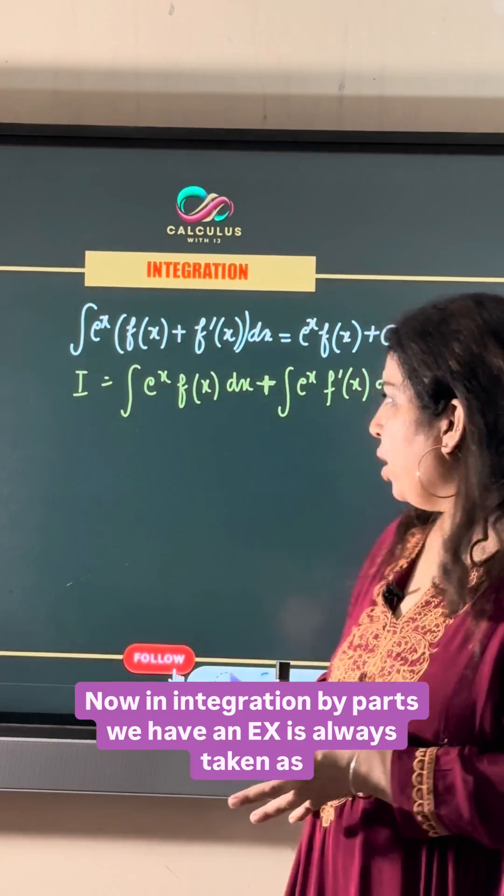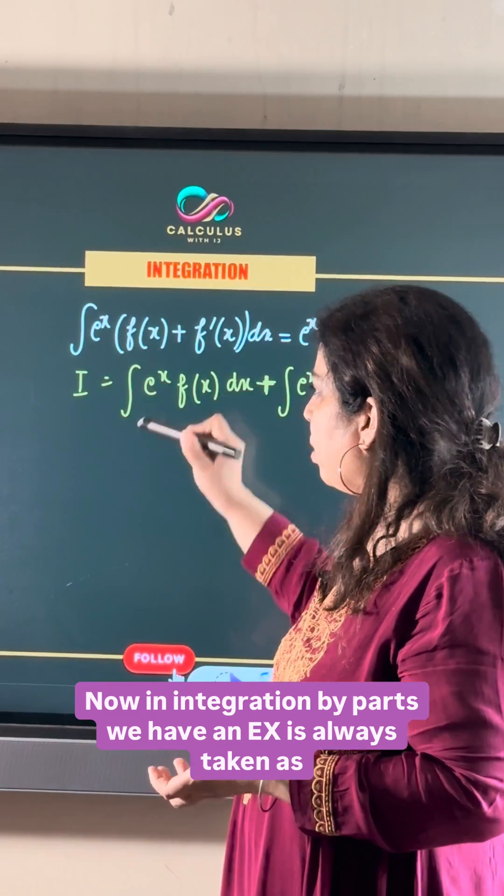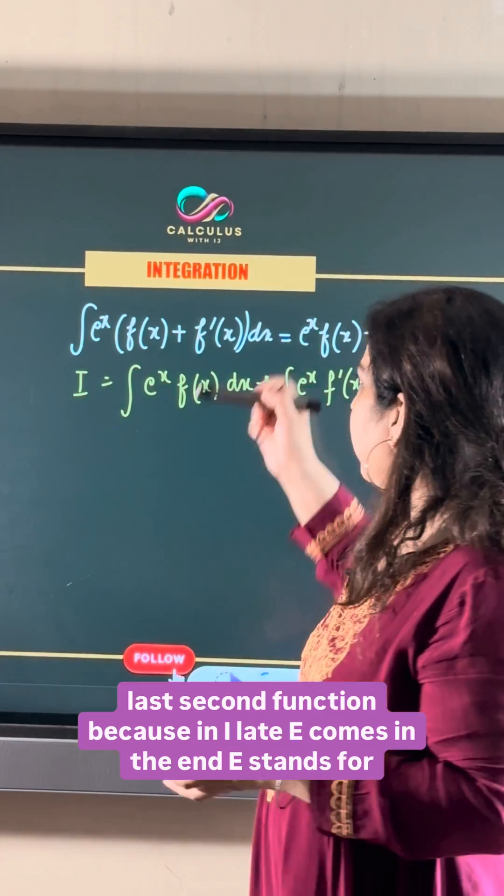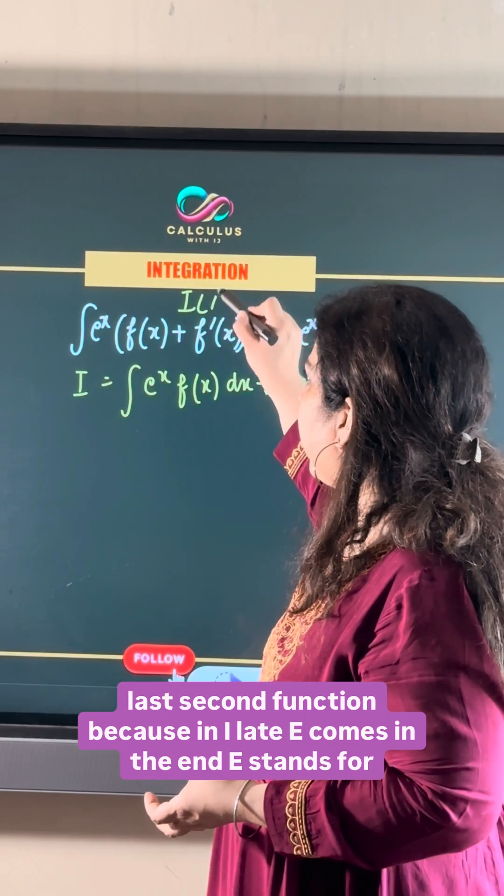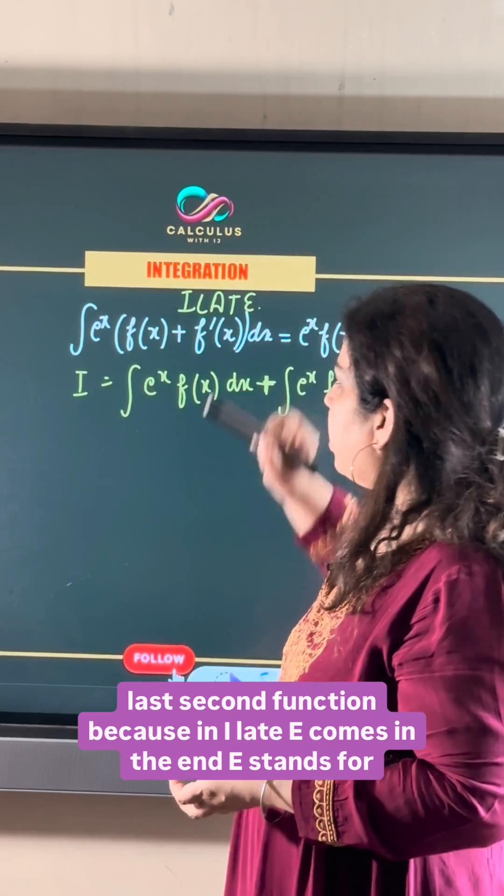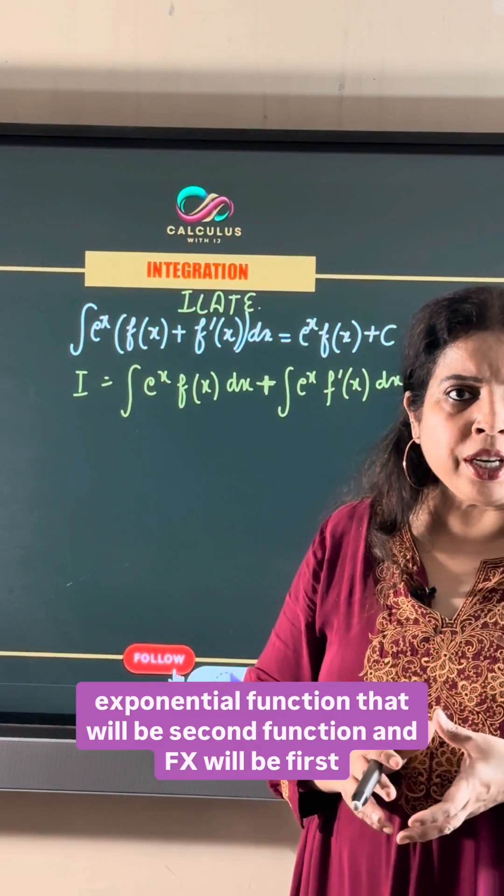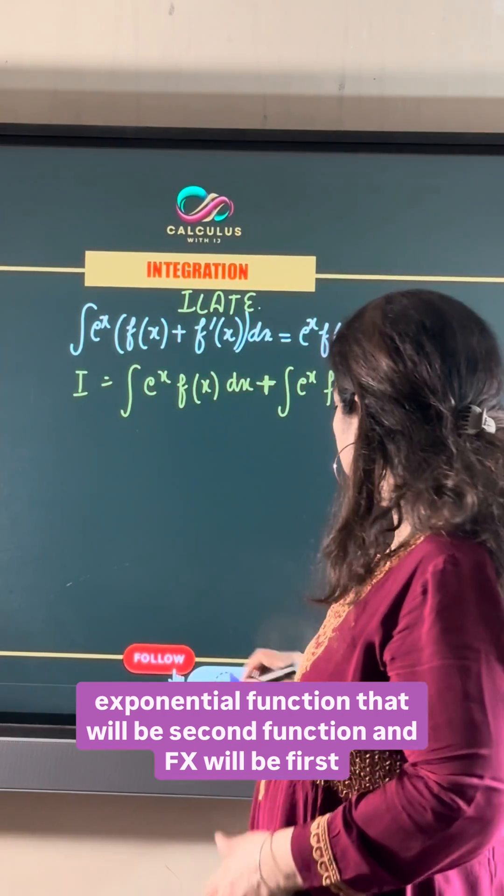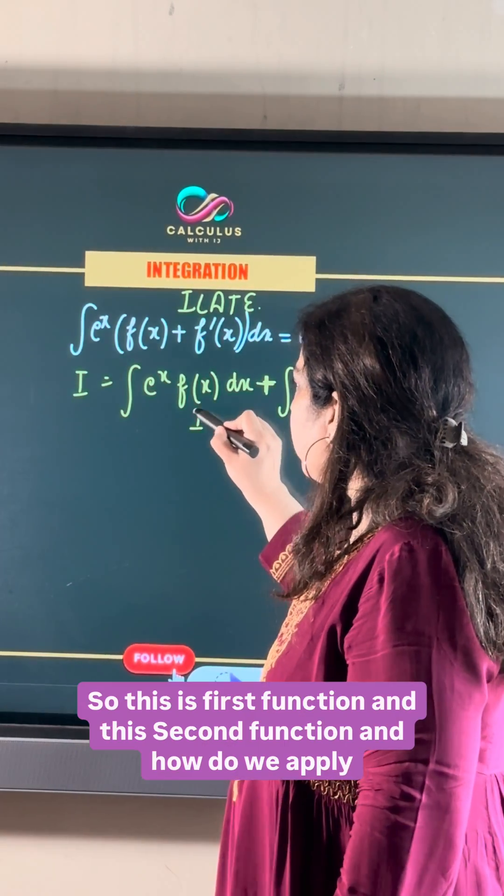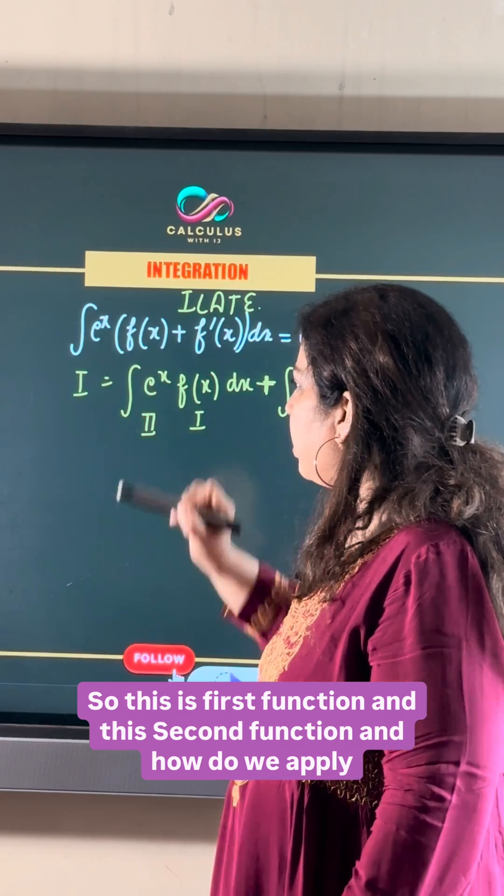Now in integration by parts we have e^x is always taken as second function because in ILATE, E comes in the end. So E stands for exponential function so that will be second function and f(x) will be first function.